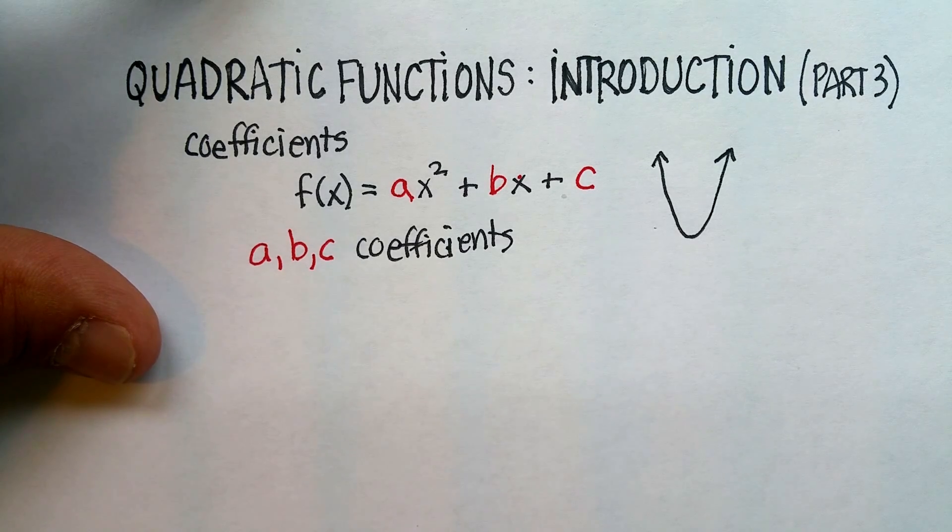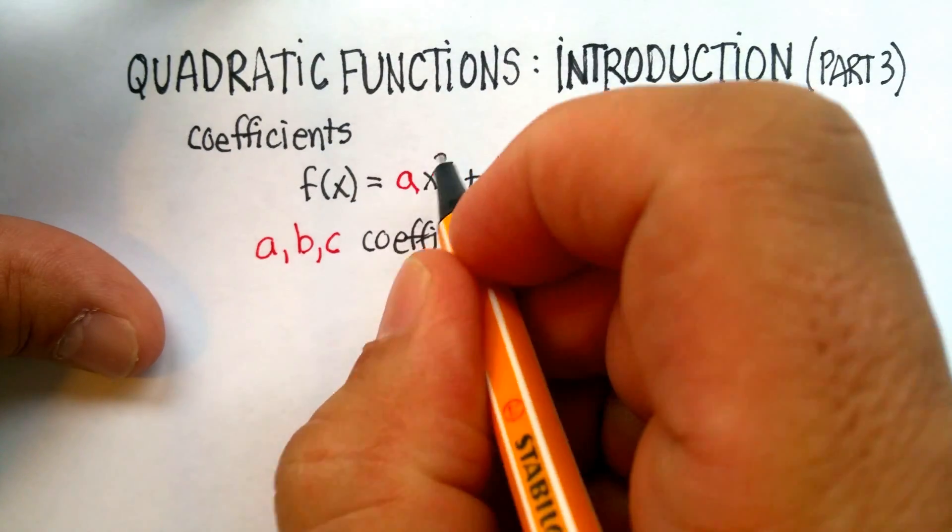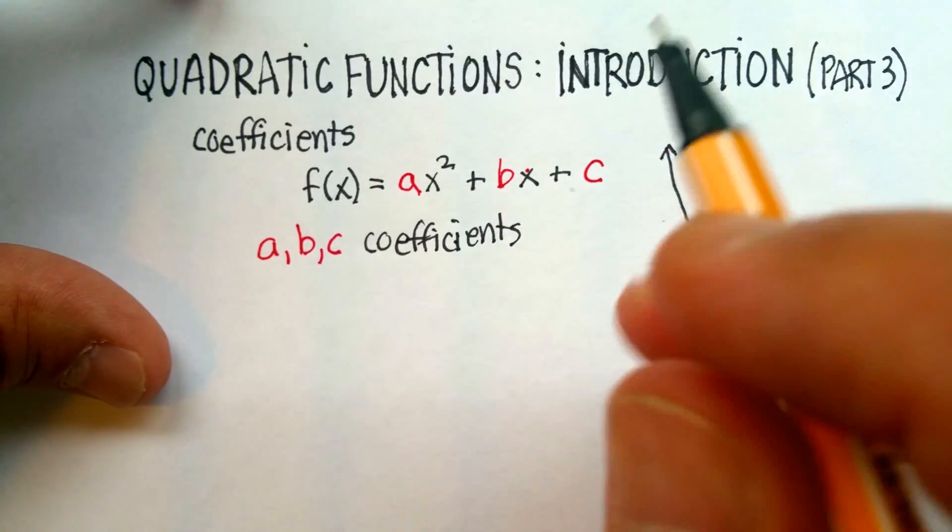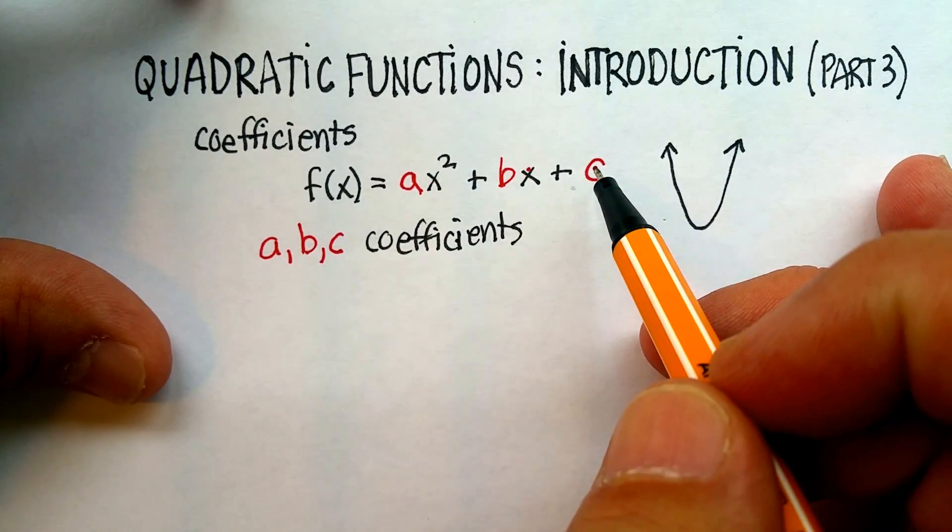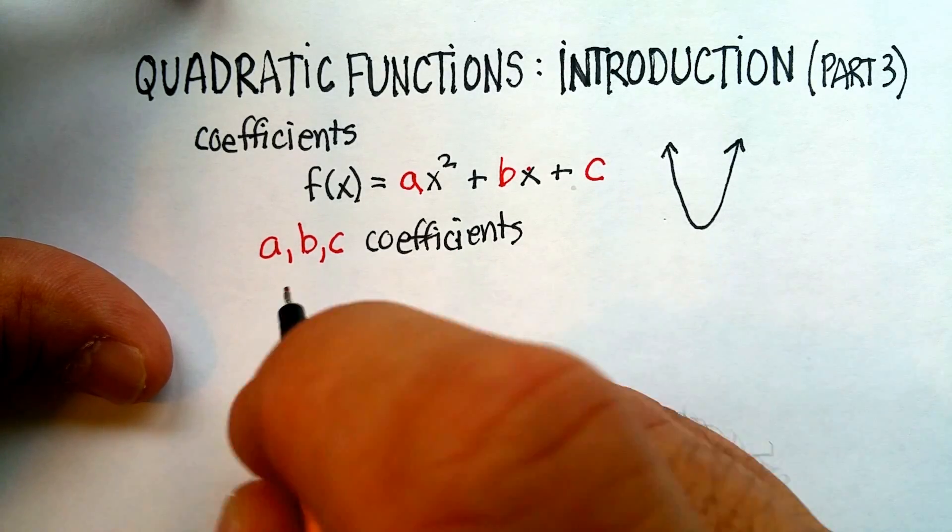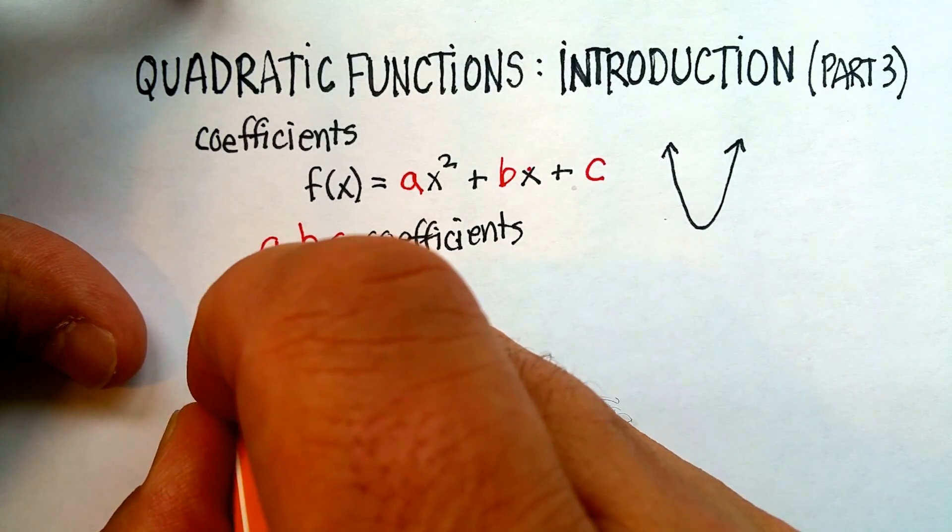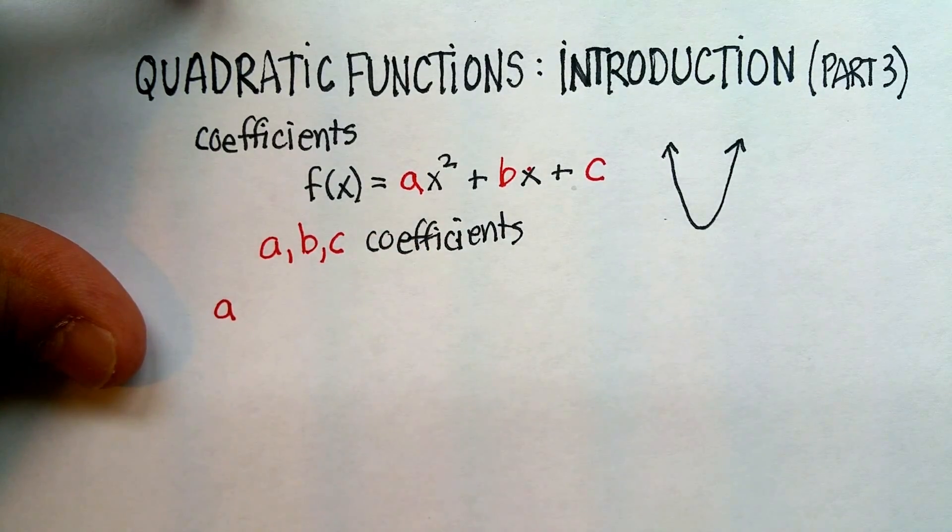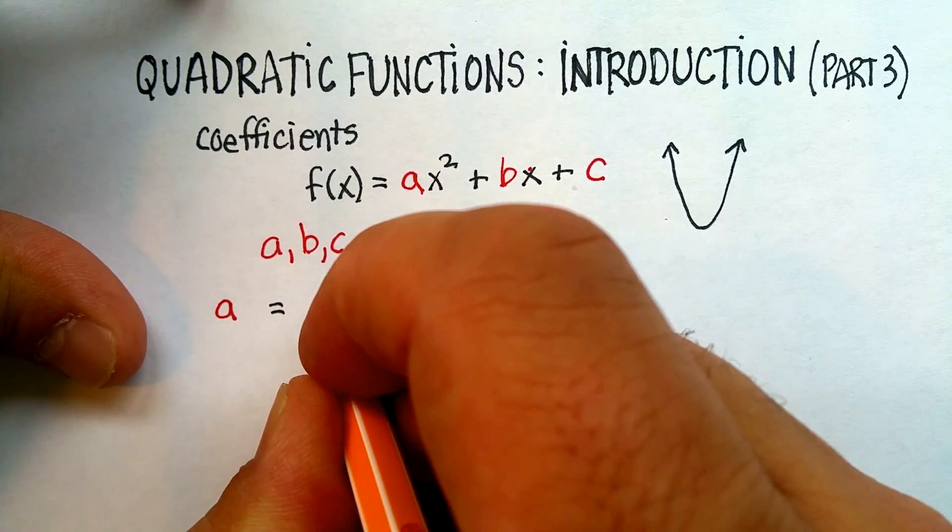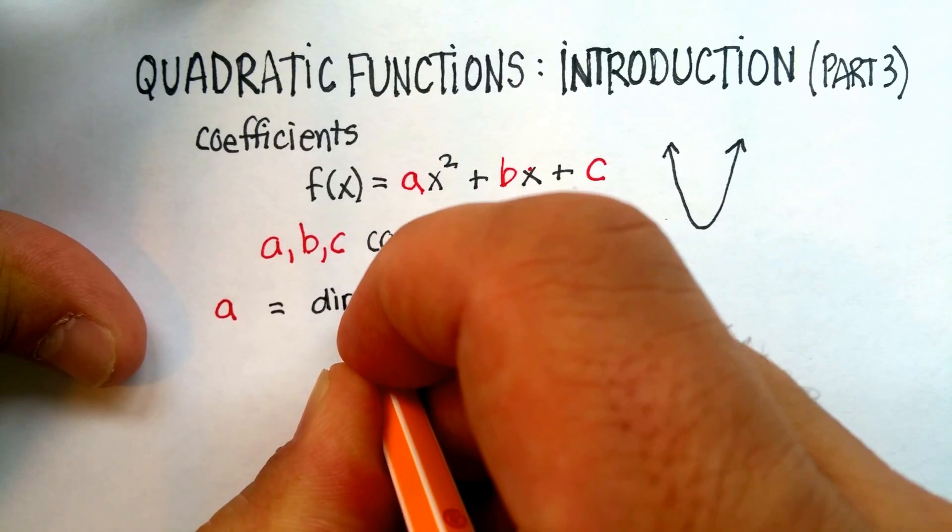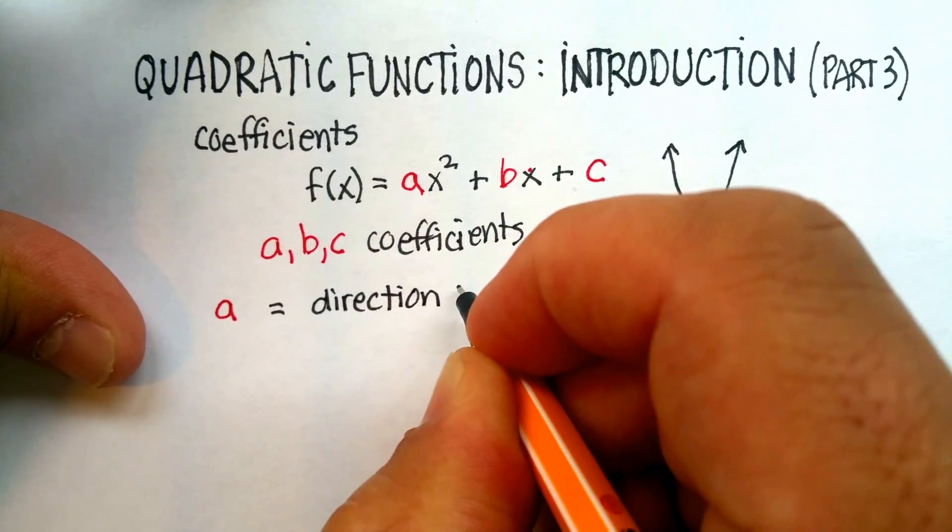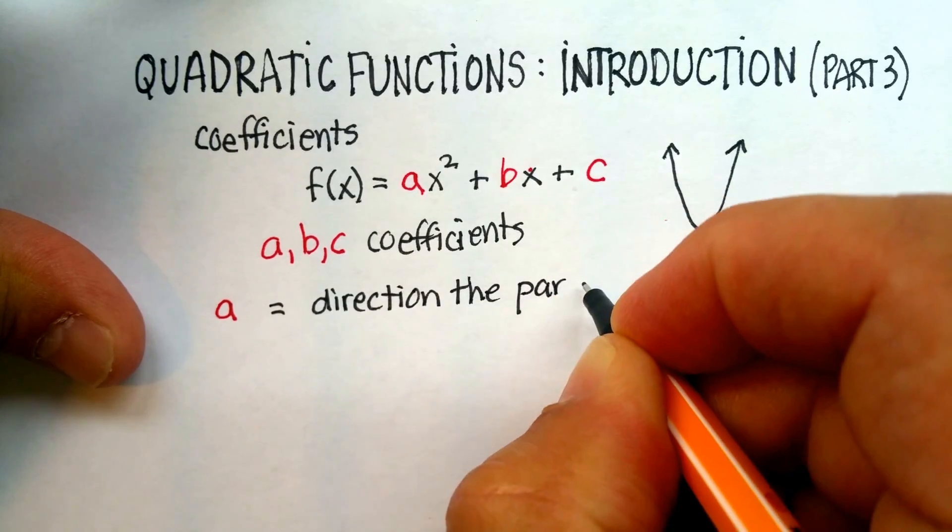Now, the a, the number that's in front of the variable x, right? Actually, coefficients are numbers that are in front of variables to begin with. So that's one definition of coefficients. But in this particular case, the a, for example, in ax squared plus bx plus c, will tell you the direction that the parabola opens.